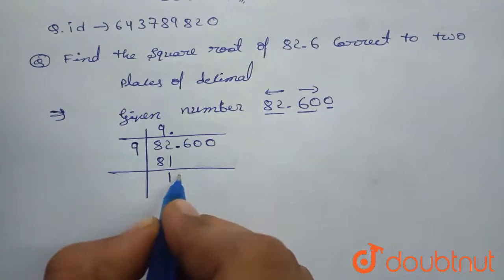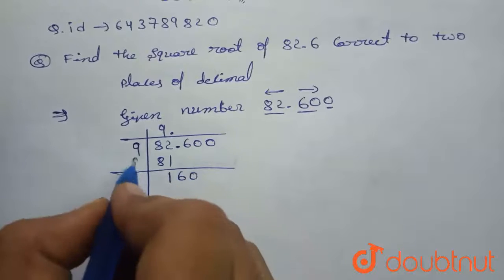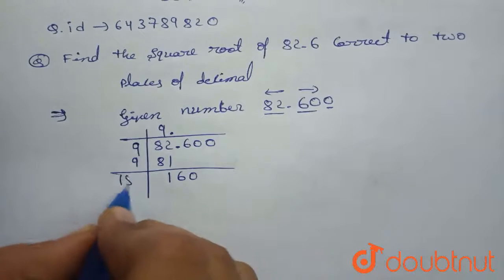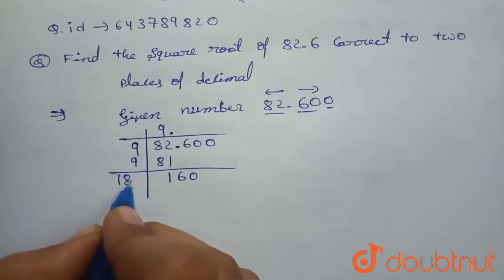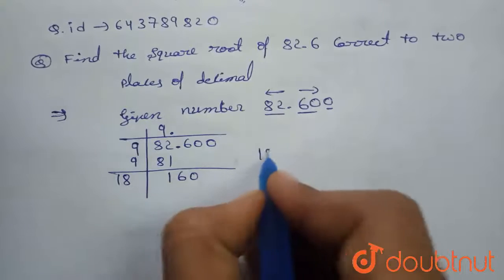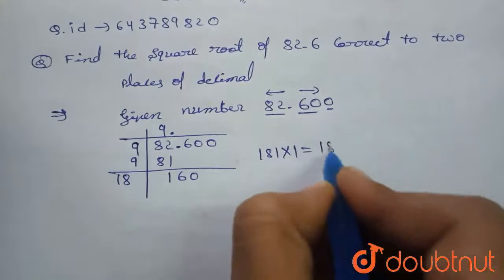We have to put decimal here and taking two numbers below, 60. 9 plus 9 is 18. 181 into 1 is 181.